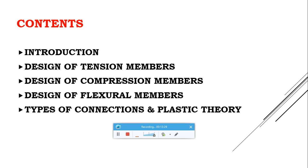Design of Flexural Members covers the design of beams in simple and built-up sections. There are two types of flexural members: laterally supported beams and laterally unsupported beams. The design procedure for both types will be covered, along with failure modes of flexural members such as web crippling and web buckling.